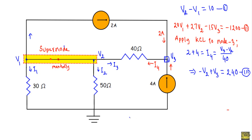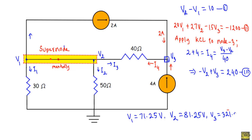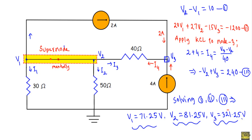Final results: node voltage V1 = 71.25 V, node voltage V2 = 81.25 V, node voltage V3 = 321.25 V. The simulator confirms these results. Thank you for watching this step-by-step supernode circuit analysis tutorial.